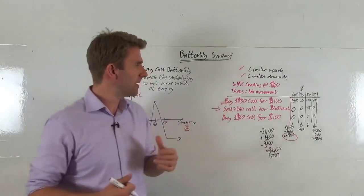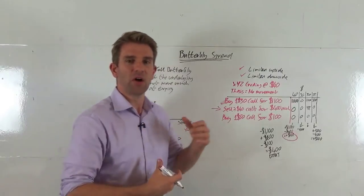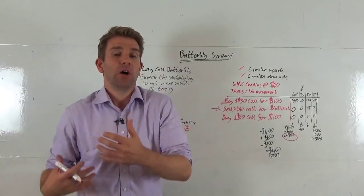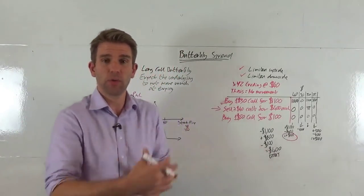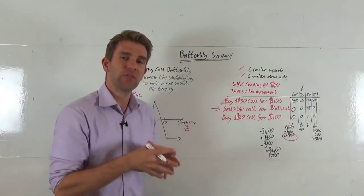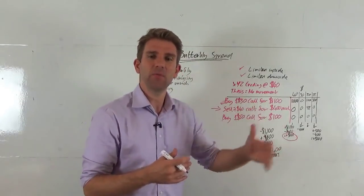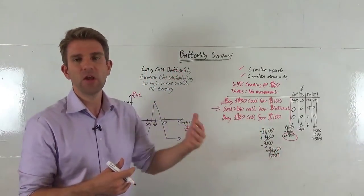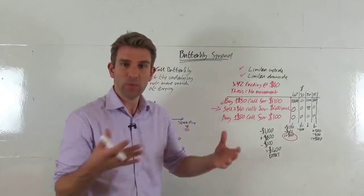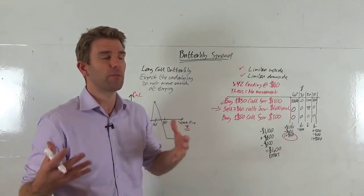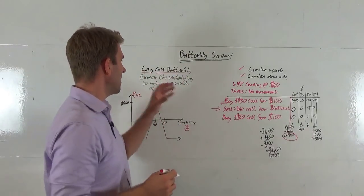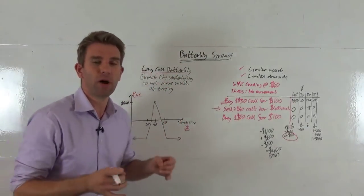We're looking at options trading strategies and different ways of making money from the markets. We know long and short, and we've looked at buying calls and buying puts. But what if we think the price is going to stay the same? What if at a specific point in time the price might move up and down but will be pretty much where it is now? How do we express that and make money from it? We construct what's called a long call butterfly — we expect the underlying to not move much at expiry.